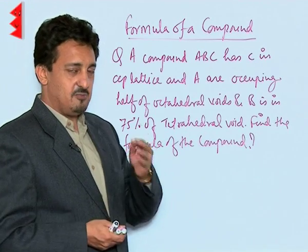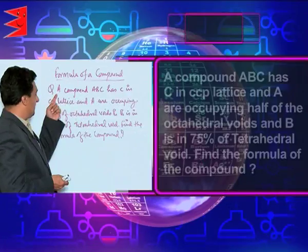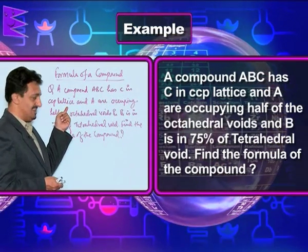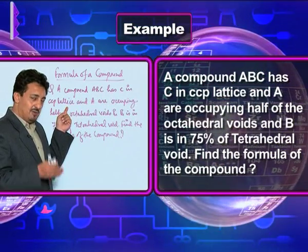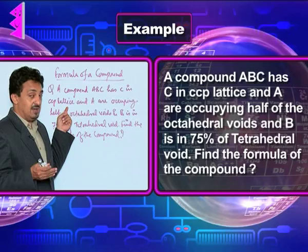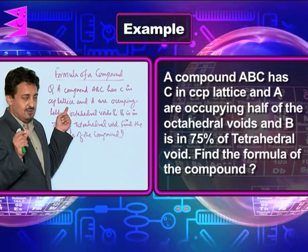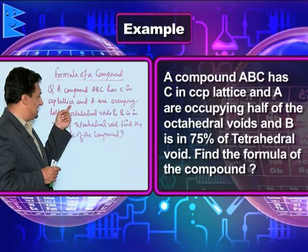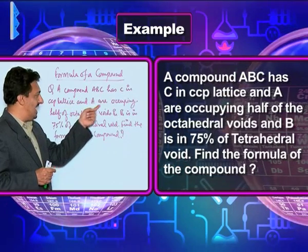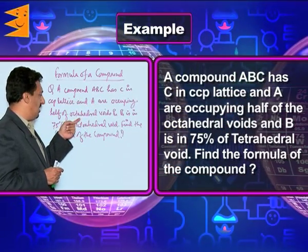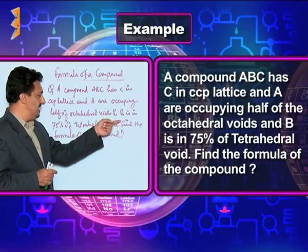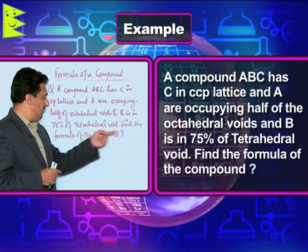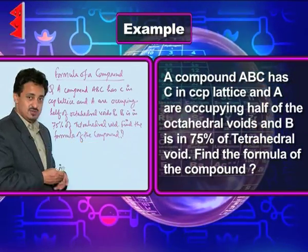Let us understand this by an example. A compound ABC has C in a CCP lattice. All information will be given in technical terms. C is in the CCP lattice, A occupies half of the octahedral voids, and B occupies 75% of the tetrahedral voids. Find the formula of the compound.